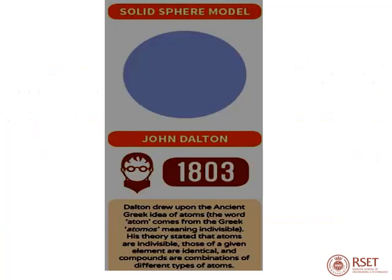The first model was done by John Dalton, who drew upon the ancient Greek idea of atoms. The word atom comes from the Greek 'atomos', meaning indivisible. His theory stated that atoms are indivisible, those of a given element are identical, and compounds are combinations of different types of atoms. He gave a simple solid sphere model with no nucleus.